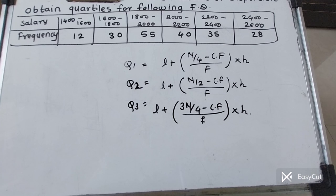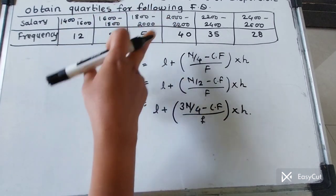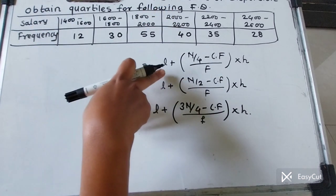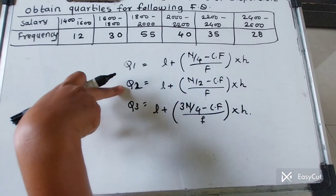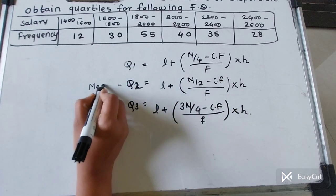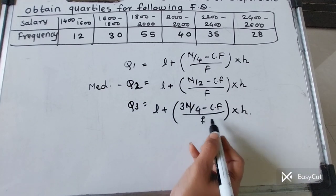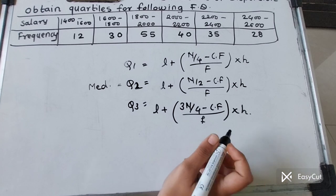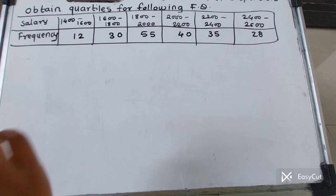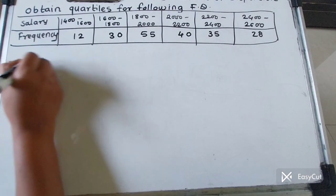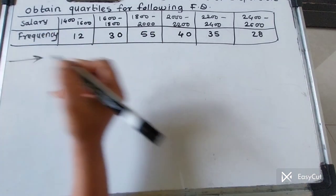Now the question is to find the quartiles Q1, Q2, Q3 for the following frequency distribution (FD). We use the formula: for Q1 — L plus (N/4 minus cf) upon f into h. For Q2, which is the median — same structure. For Q3 — L plus (3N/4 minus cf) upon f into h. We follow the same steps used for finding the median.